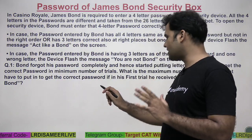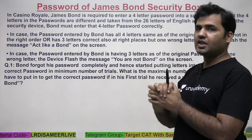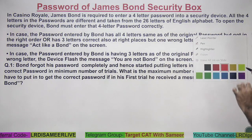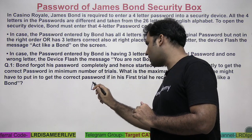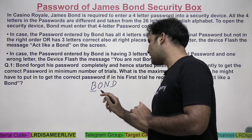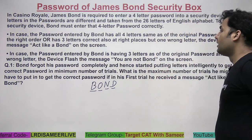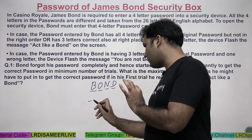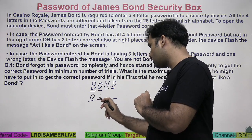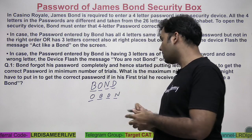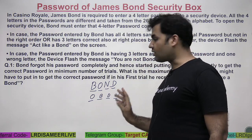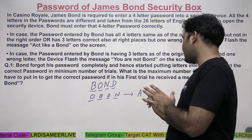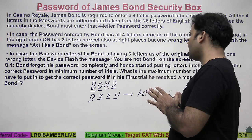Let's have a look at what this means. Let's say the password of James Bond's security box is B-O-N-D. You're just assuming it to understand the statement. If the password is BOND but James Bond has forgotten it, and he's using the same four letters but in a different order — say he enters O-B-D-N — all four letters are the same but the order is not. In this case, the device will flash the message 'act like a Bond.'